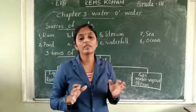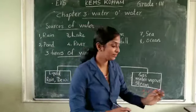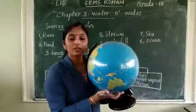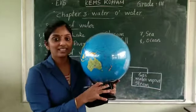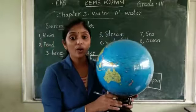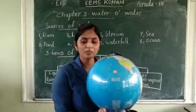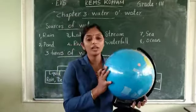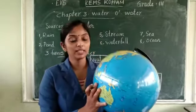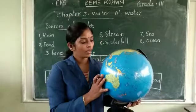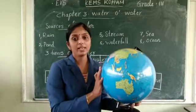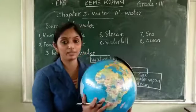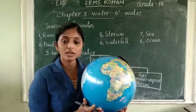And now I will show you one thing. What is this? This is a globe. And what is a globe? A globe is a symbolic representation of the earth on a sphere. Otherwise, a globe is a picture of the earth drawn on a sphere. It is called a globe.